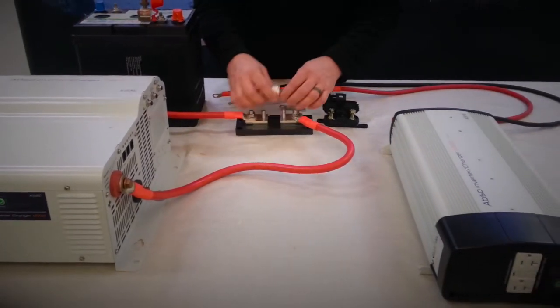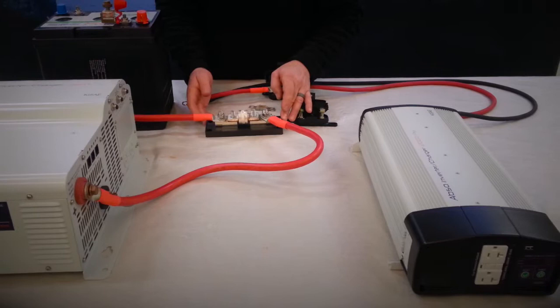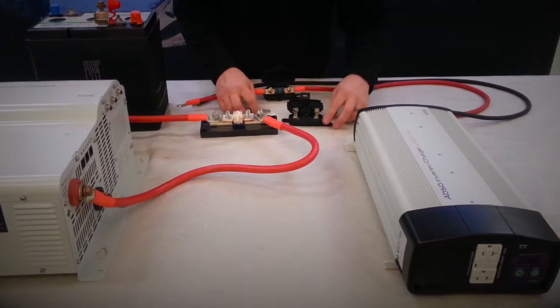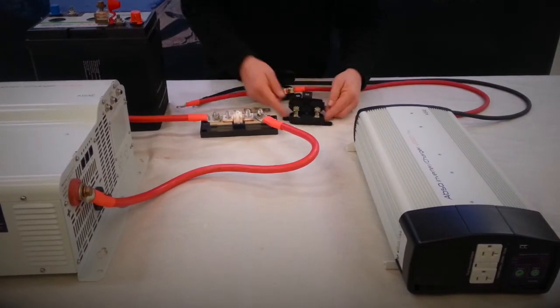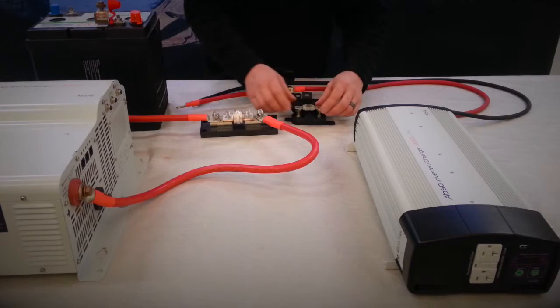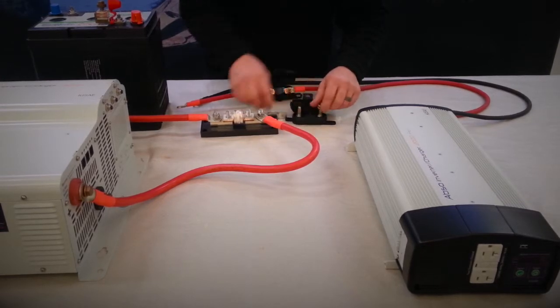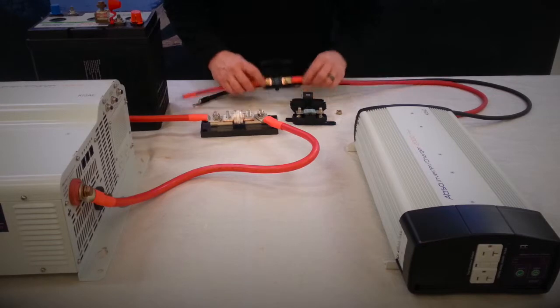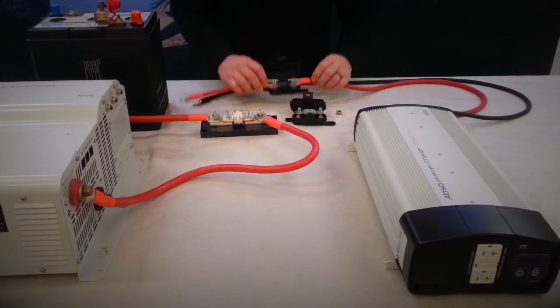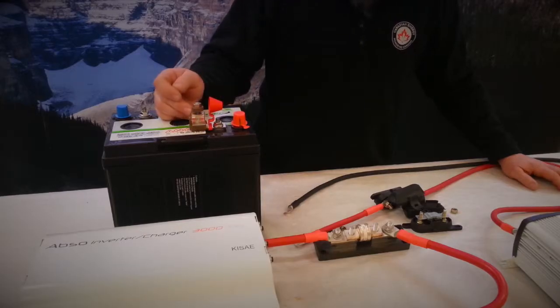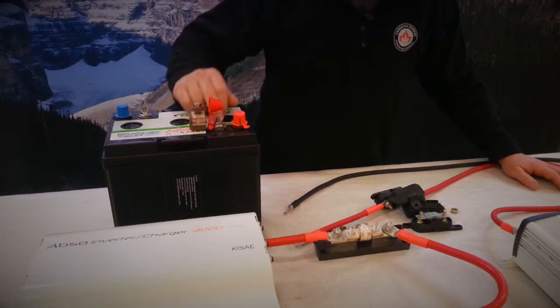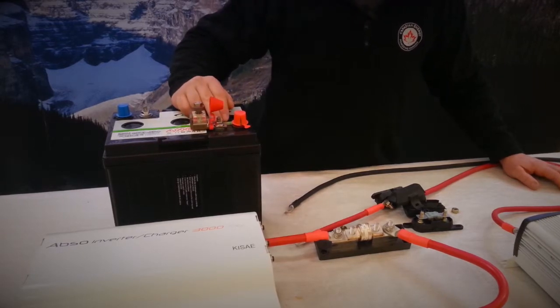The options that we have is a fuse block for the class T, the A and G fuses. We have a plastic housing called a bolt down where the fuse just fits right in, drops in and your cables attach to it like so. Another option that we have is an MRBF which attaches right to the stud post on the battery.